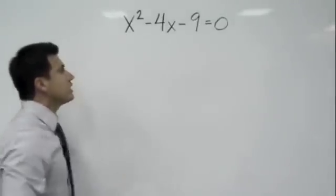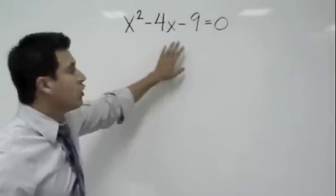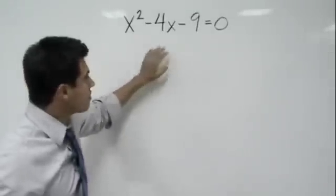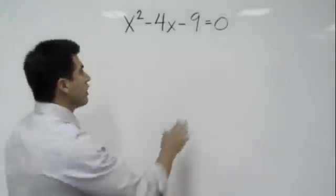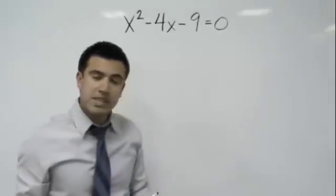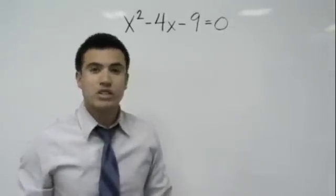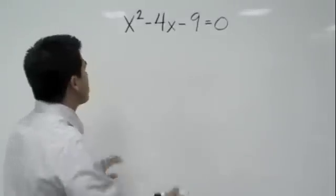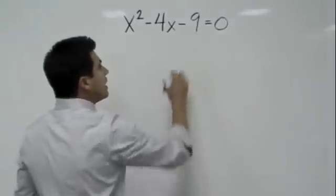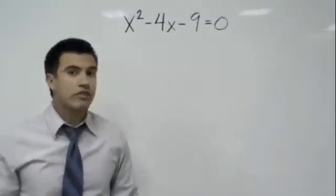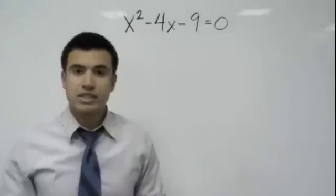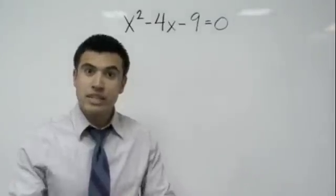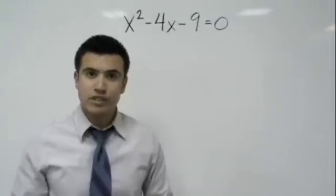Whenever you're solving by completing the square, you want to look at the trinomial that you have on one of the sides of the equal sign. Normally, for the most part, they'll give you a trinomial and set it equal to zero. Sometimes they might not, but you address it the same way. Here's what we'll do: we want to look at it and see if it's a perfect square trinomial. If you don't know what a perfect square trinomial is, watch the video that we have that shows you exactly how to factor a perfect square trinomial.